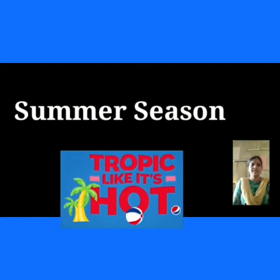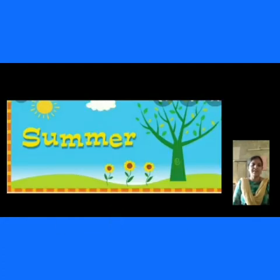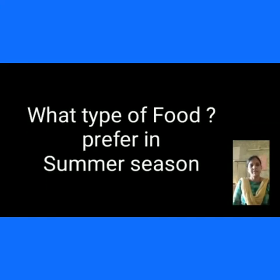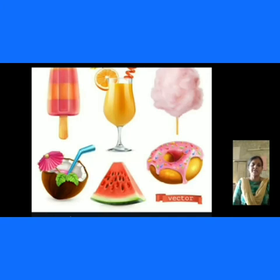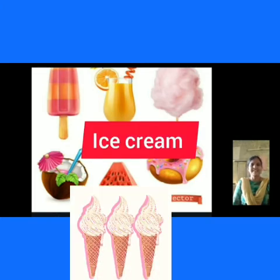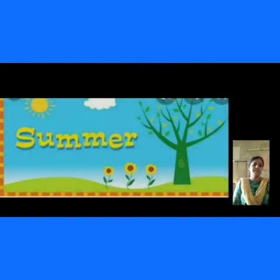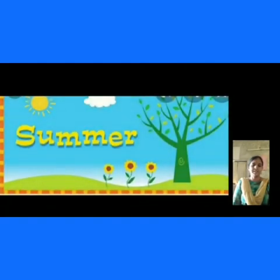Next is the summer season. The climate condition in summer is very hot. What type of food can you prefer to eat in summer? We can prefer to eat cool items. For example, ice creams, cool drinks, and juices. That is why we eat cool items in summer.